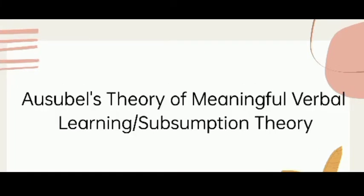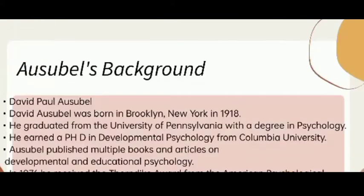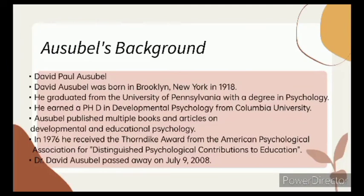Before we go to the main topic, let us first know the background profile of Ausubel. Ausubel's complete name is David Paul Ausubel. He was born in Brooklyn, New York in 1918.